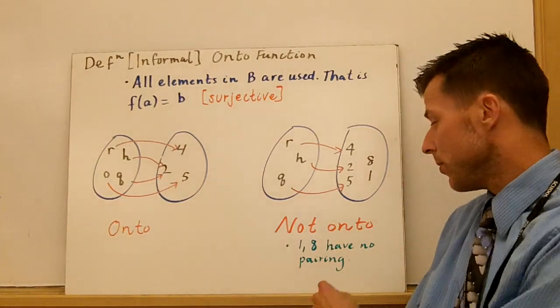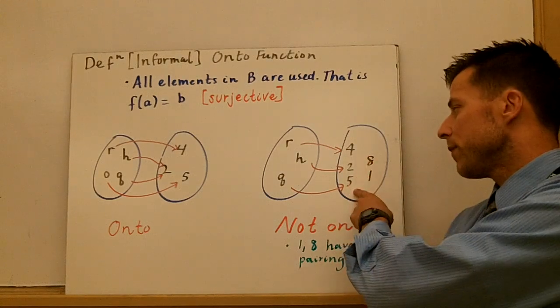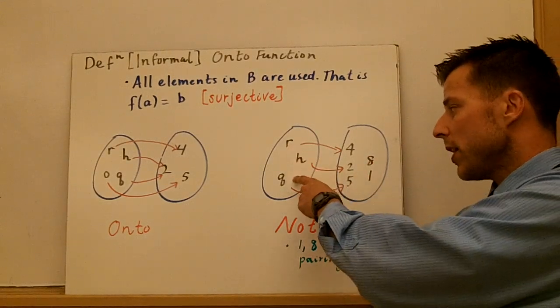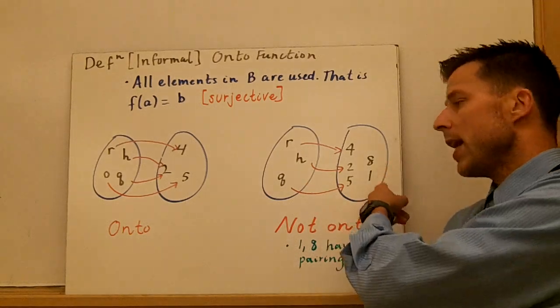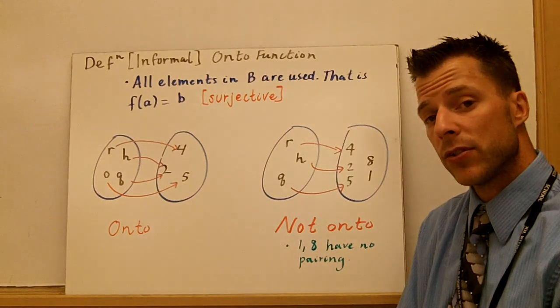Something that's not onto, notice how in this one, 1 and 8 have no pairing. So 4, 2, and 5 have a pairing with r, h, and q, respectively, but 8 and 1 are just hanging out. They have nothing being paired with it. That's not an onto function.